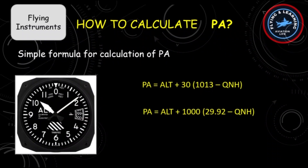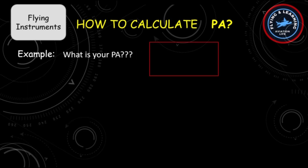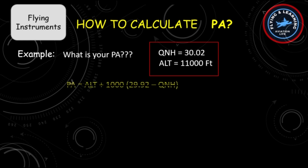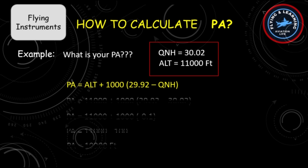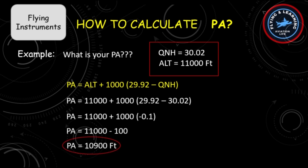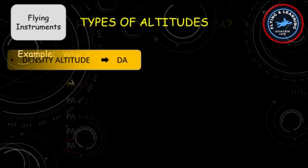How to calculate your pressure altitude? A simple formula for calculation is shown. If you know the QNH value of the aerodrome — for example, if you are flying at an altitude of 11,000 feet and the QNH value is 30.02 inches of mercury — then to calculate your pressure altitude, either feed the QNE settings in the altimeter or apply this formula. The pressure altitude would be 10,900 feet.